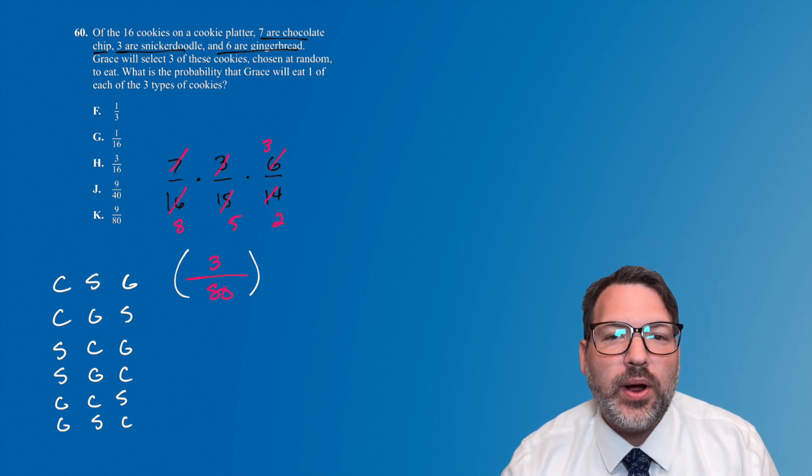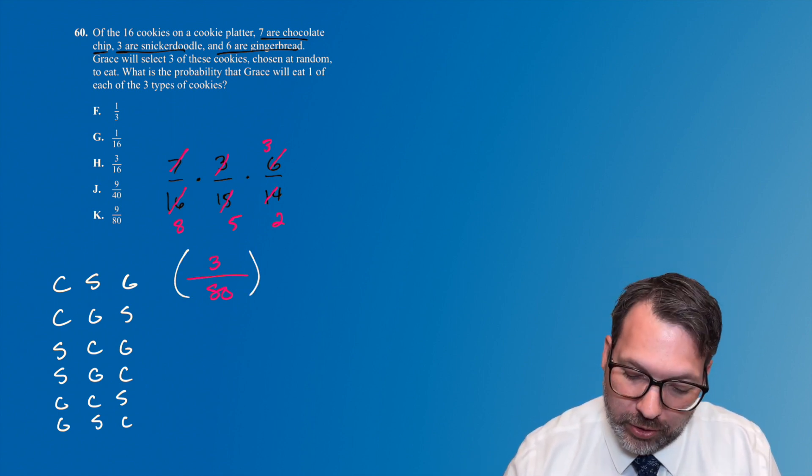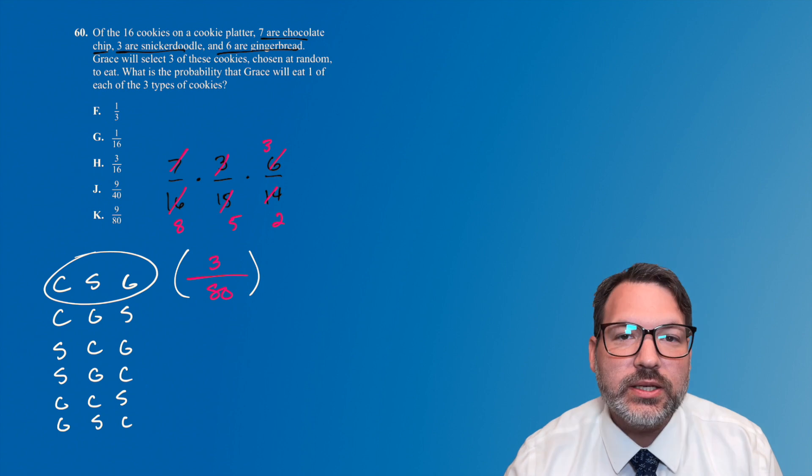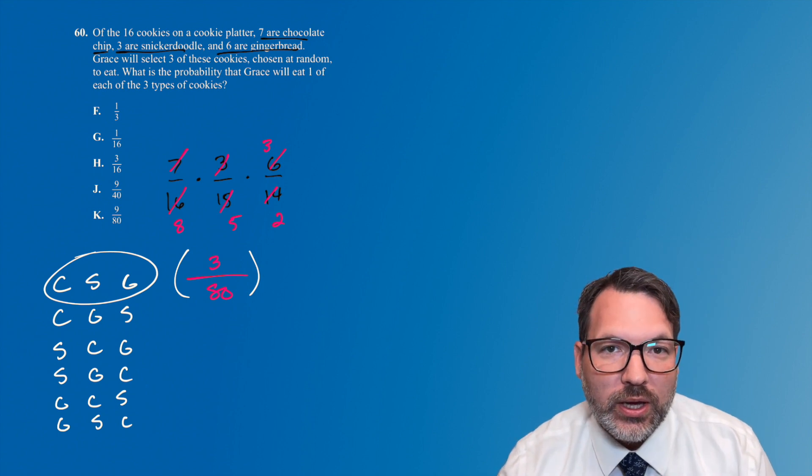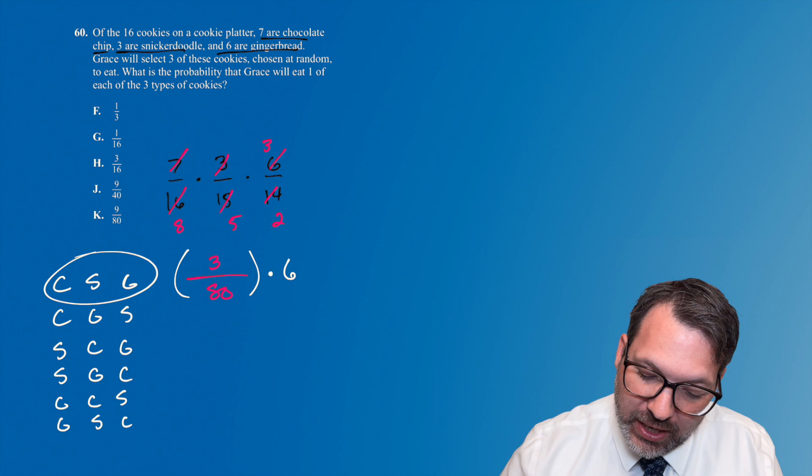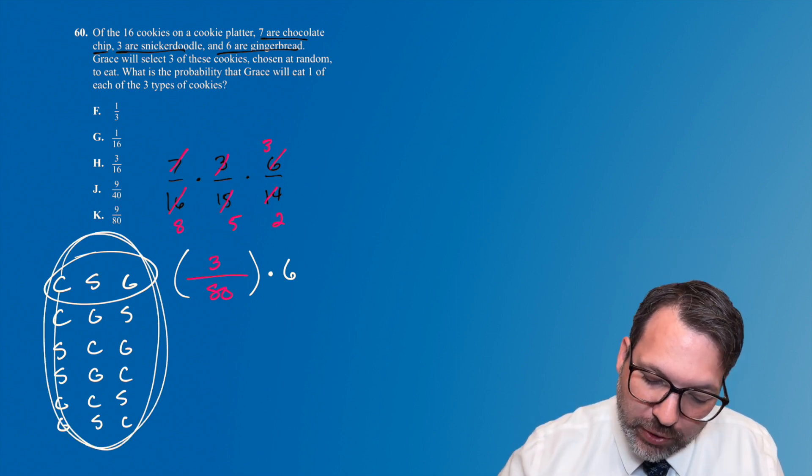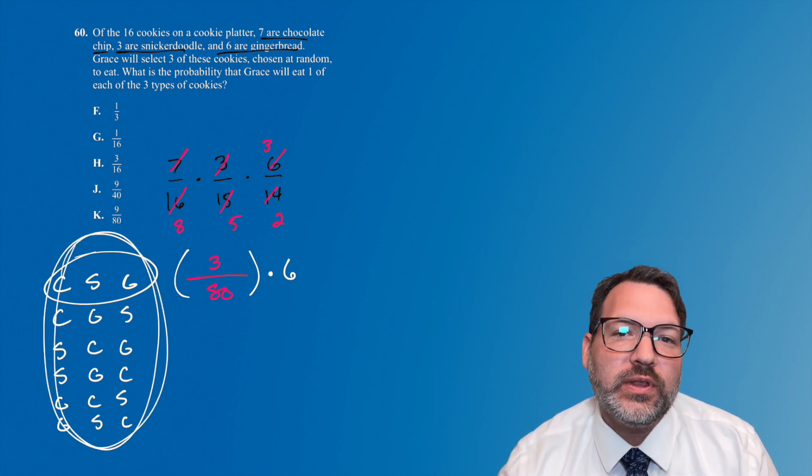In other words, this 3 out of 80 probability for that one particular arrangement of chocolate chip cookie, snickerdoodle, then gingerbread cookie actually needs to be multiplied by six to account for these six different arrangements that are possible for these three cookies.